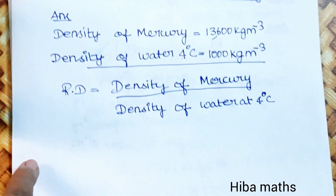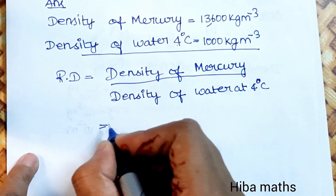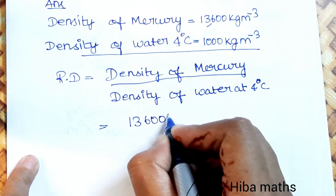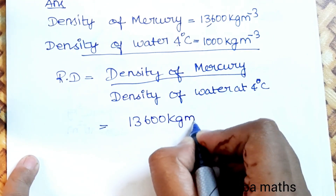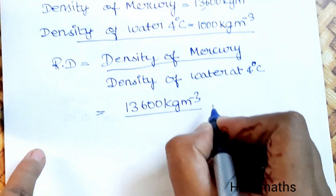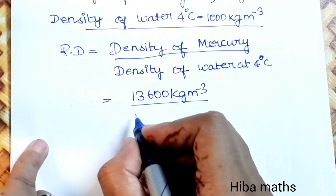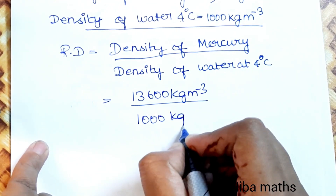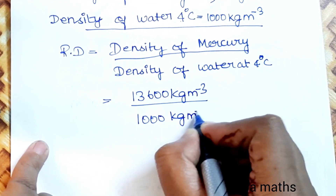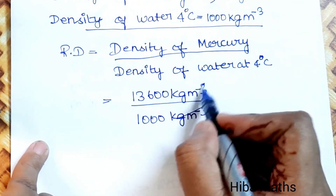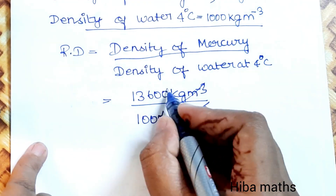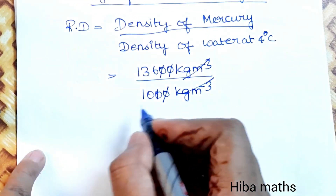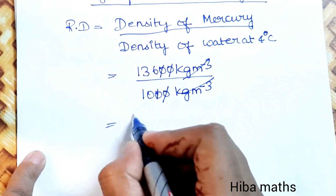Relative density of mercury equals density of mercury divided by density of water. That is 13,600 kg per m³ divided by 1000 kg per m³. Cancelling the units, we get 13,600 divided by 1000.